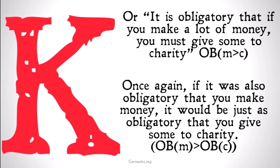Take another example: it is obligatory that if you make a lot of money, you must give some to charity — obligatory that M implies C. Once again, if it is also obligatory that you make money, then it would be obligatory that you give some to charity: obligatory that M implies obligatory that C.